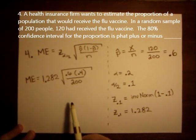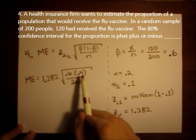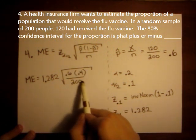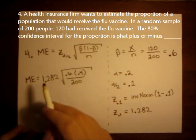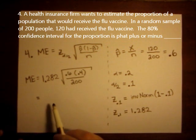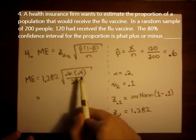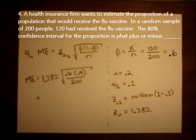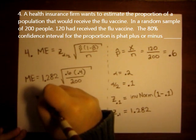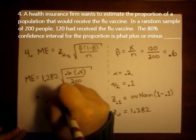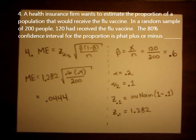So when you put this in your calculator, be very careful with parentheses to make sure everything is multiplied and divided before you take the square root. So when we do 1.282 times the square root of 0.6 times 0.4 over 200, I get the final answer of 0.0444 as my margin of error.